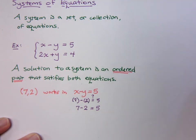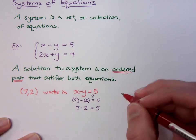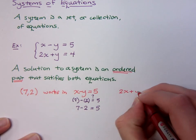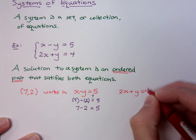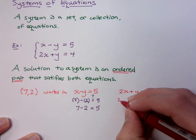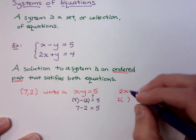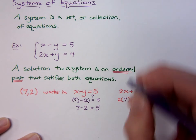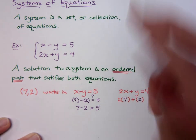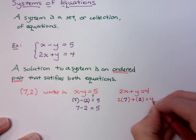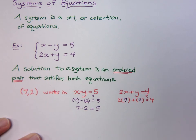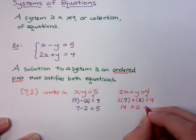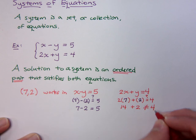However, does (7, 2) work in the other equation? Well, let's see. I've got 2x plus y equals 4, and I'm trying to replace the x with 7 and the y with 2. I'm trying to figure out, is this true? Is that a true statement? Well, when I do the math here, I see that I've got 14 plus 2, and this does not equal 4.